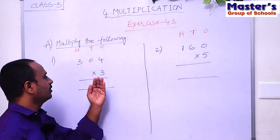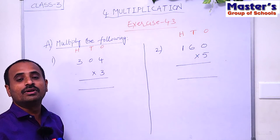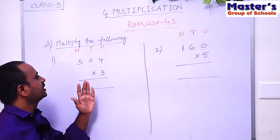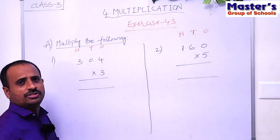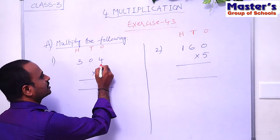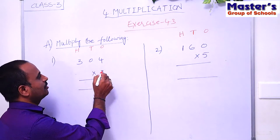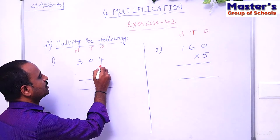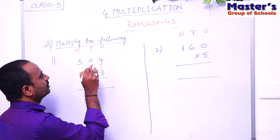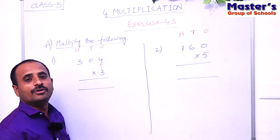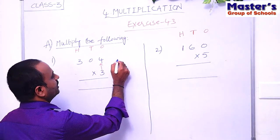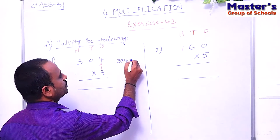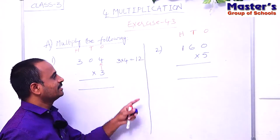Let us start multiplication from the ones place. We have already discussed how to multiply a given number with a single-digit number. First we have to multiply the digit in the ones place with 3. The digit in the ones place is 4, so multiply 4 with 3. That is 3 × 4 = 12, and 12 is a two-digit number.